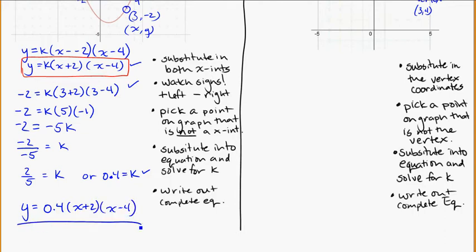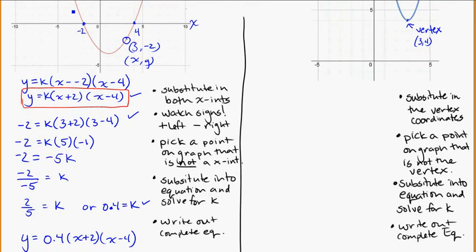Always double-check that your answer makes sense. Here, k is positive and the parabola points up — which is correct. It's also less than 1, and the parabola does appear somewhat wide, which is consistent. Remember: k less than 1 makes the parabola wider, and k greater than 1 makes it narrower.